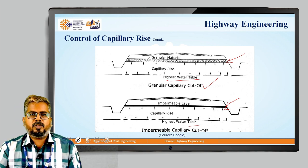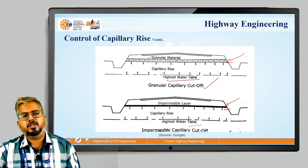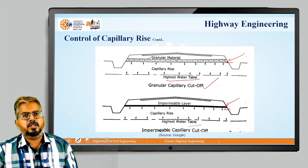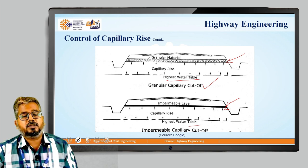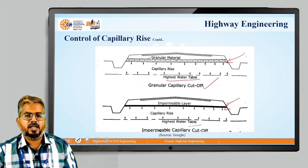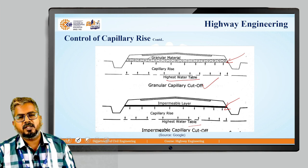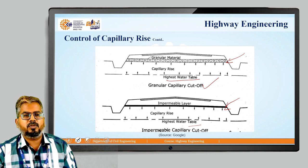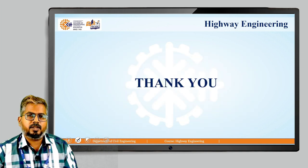What we have learned today is about highway drainage — surface drainage and the structures that can be provided, including cross drainage structures for surface drainage. We have also seen the various ways to deal with moisture content and how to reduce it in the subgrade soil level. Thank you.